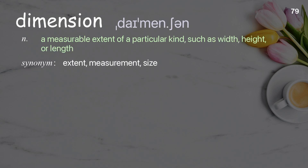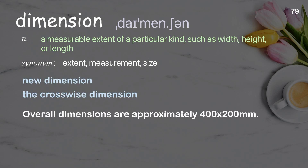Dimension: a measurable extent of a particular kind, such as width, height, or length. Examples: new dimension, the crosswise dimension. Overall dimensions are approximately 400 by 200 millimeters.